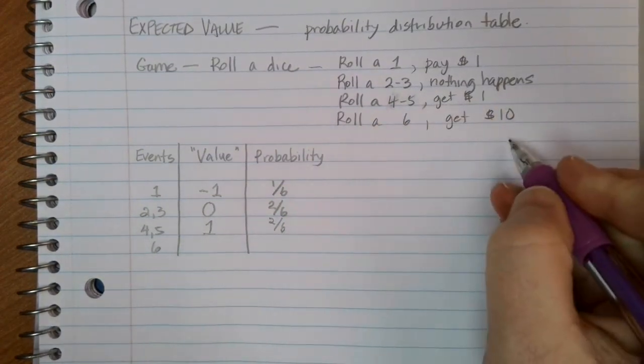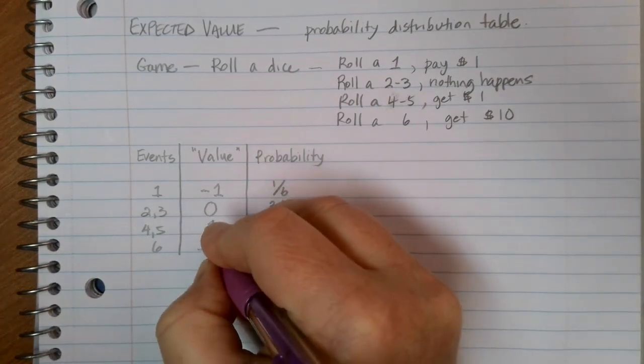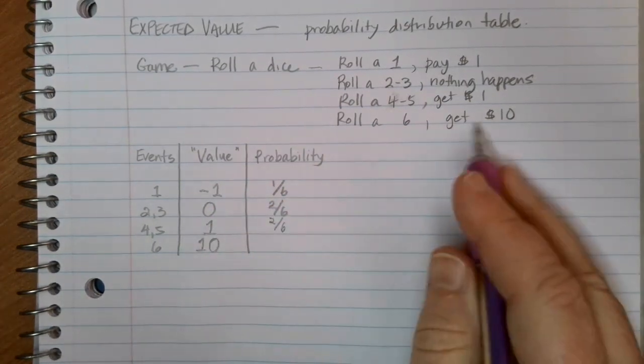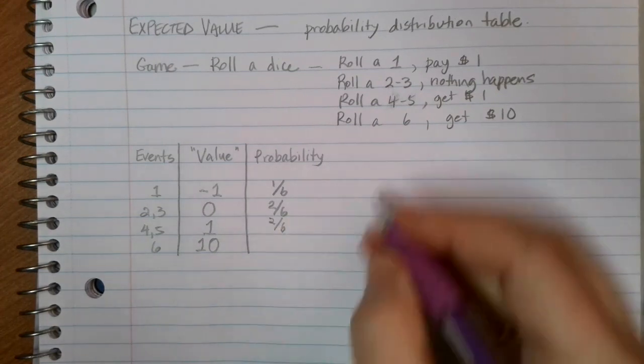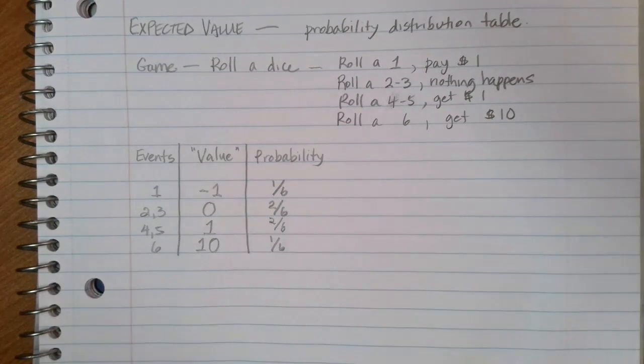If I roll a six and end up with ten dollars, that's my value. And the probability of getting ten dollars is one out of six because it only happens if I roll a six on a six-sided dice.